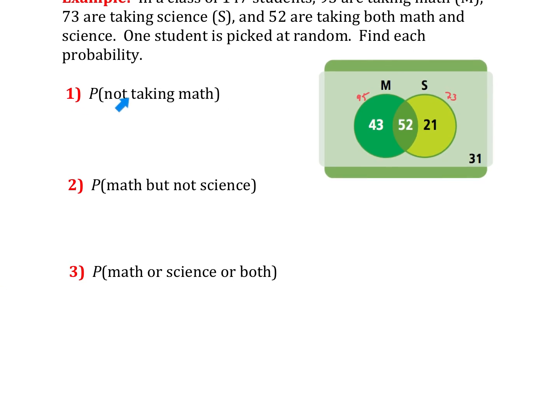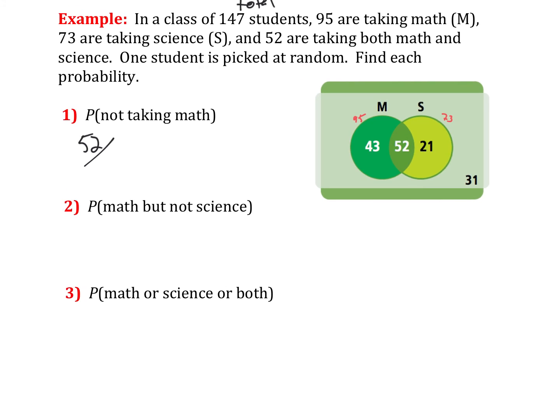So let's figure out the probability that we select a student who is not taking math. So a student that is not in this circle. Well, there's 21 here. There's 31 here. There would be 52 students not in that circle. So we'd have 52 over our total, which was 147. The probability we select a student who's taking math, so he's in this circle, but he's not taking science. So they have to be in the math circle, but not in the science circle. That would just be this 43 here. So we'd have 43 out of our total 147. And we would convert these to decimals as needed.